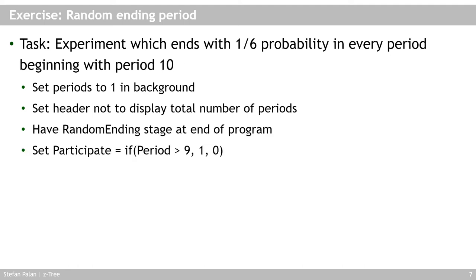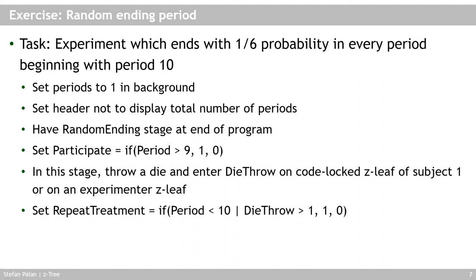Create a stage at the end called 'random ending'. Set the participate variable to one if the period number is greater than nine, and to zero otherwise, so subjects only see this stage from period ten onwards. In this stage, you as the experimenter throw a die. One way to enter the result: have a box that only the first subject sees, requiring them to enter a secret code only you know, then a second box where you enter the die throw.